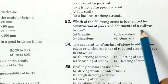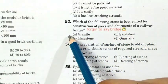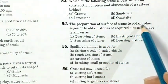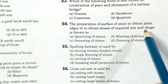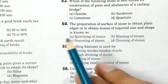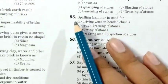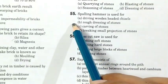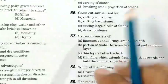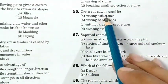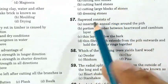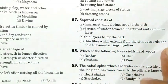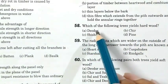Which of the following stones is best suited for construction of piers and abutments of railways? Granite. The preparation of the surface of stone to obtain plain edges or stones of required size and shape is known as dressing of stones. A spalling hammer is used for rough dressing of stones, and a cross-cut saw is used for cutting hard stones.